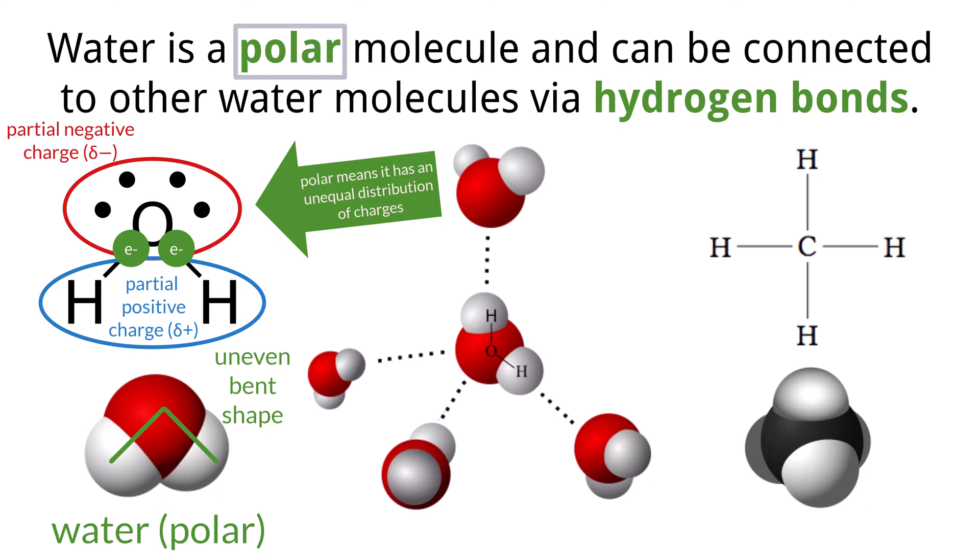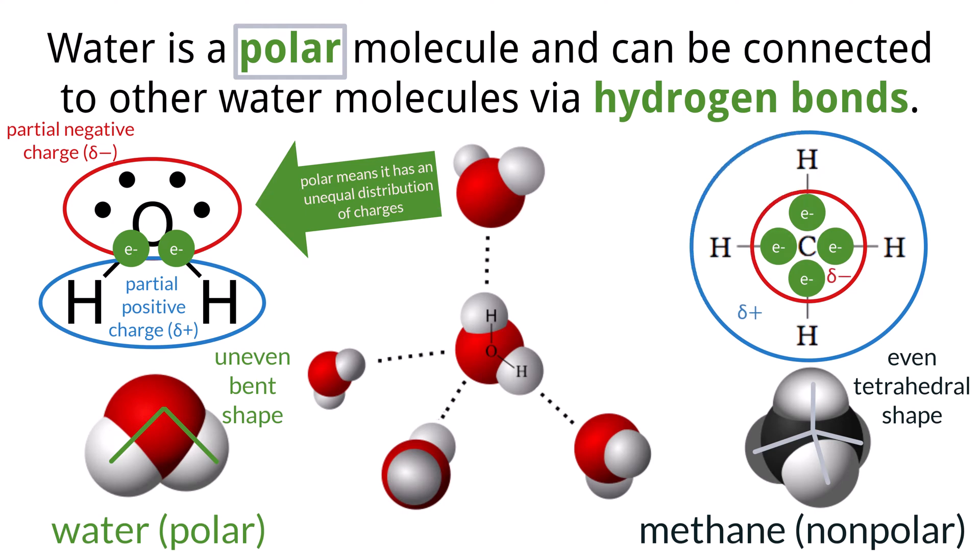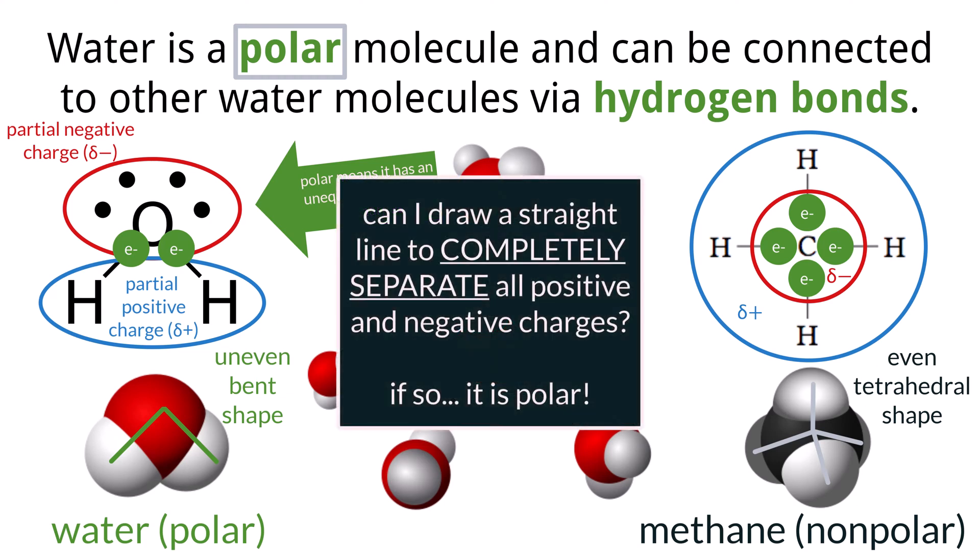And because the general shape of a water molecule is bent and uneven, the pull of these electrons causes charges to form. This does not happen with evenly distributed bonds like we see in methane, where the pulls of electrons are evenly distributed and it does not create polar ends.